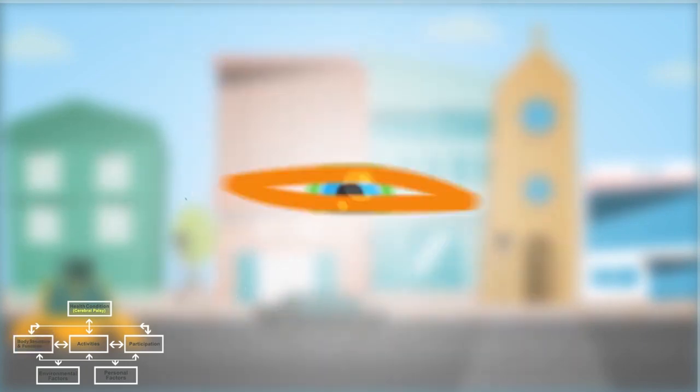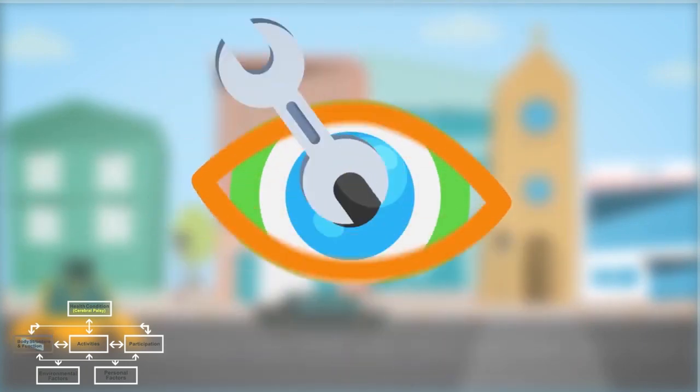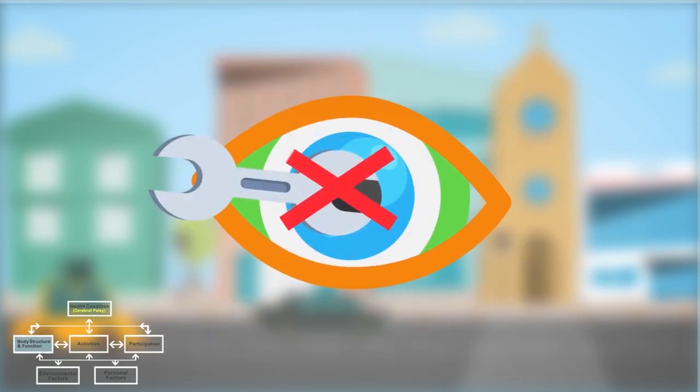Consider an example. Many people use glasses to help them see. Glasses do not fix the problem of the eye, but help us to function effectively by enabling us to see more clearly.